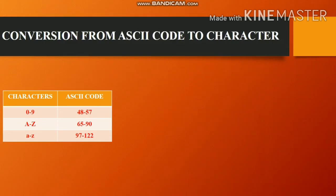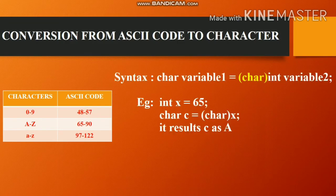Conversion from ASCII code to character: the syntax is char variable1 = (char) variable2. For example, int x = 65; char c = (char) x; results in c as the upper case letter 'A'.